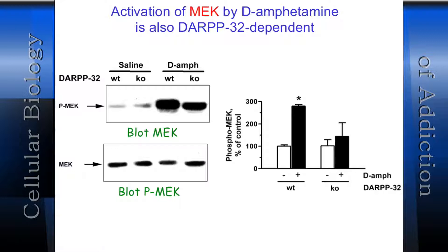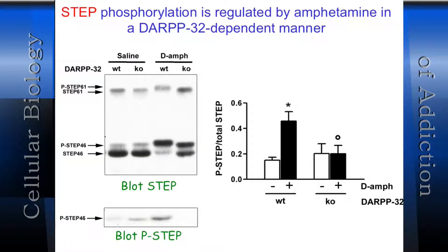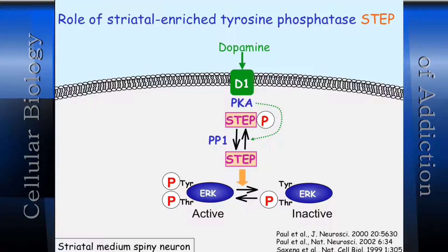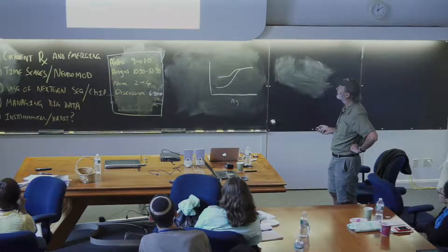It turned out to be more complicated, because this was looking at STEP regulation at the ERK level. We also found that the DARPP system works upstream of ERK at the MEK level. Looking at phospho-MEK — the upstream kinase to ERK — you get dramatic stimulation of MEK phosphorylation with amphetamine, which is significantly diminished in the knockout, though not completely.